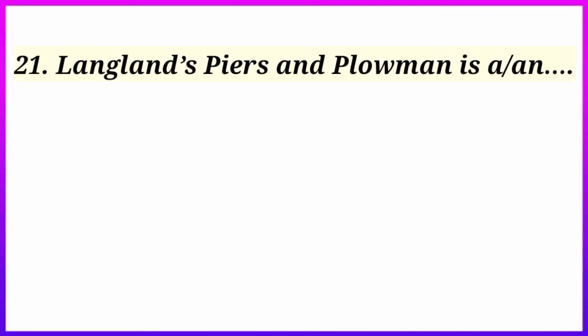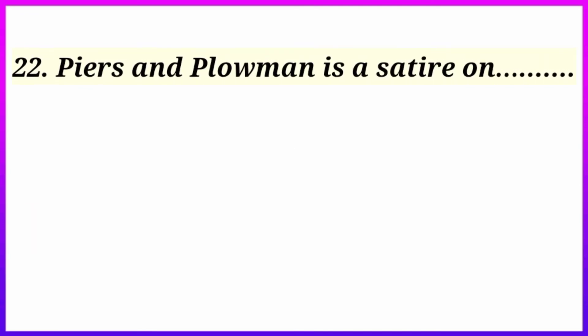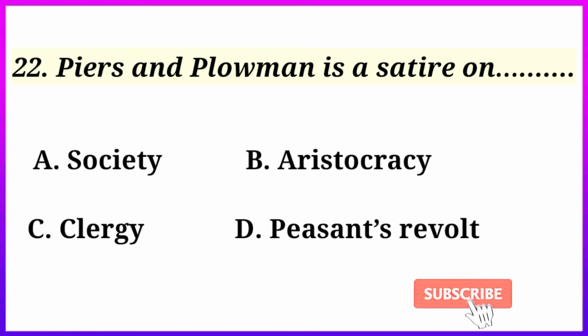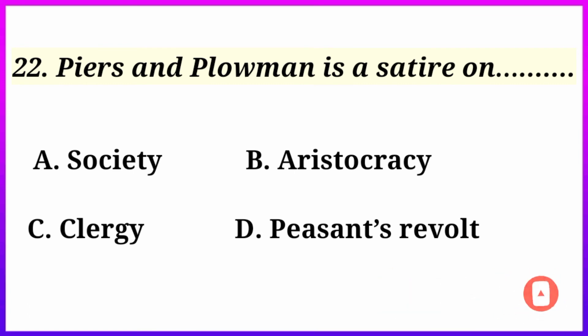Next: Langland's Piers the Plowman is an — elegy, ballad, satire, or allegorical poem. The answer is a satire. Piers the Plowman is a satire on — society, aristocracy, clergy, or peasant revolt. The answer is clergy.